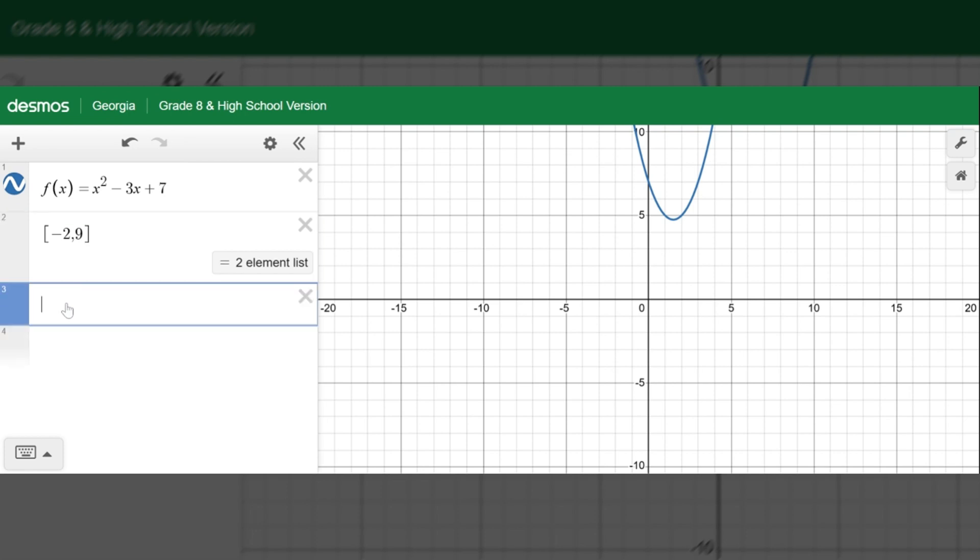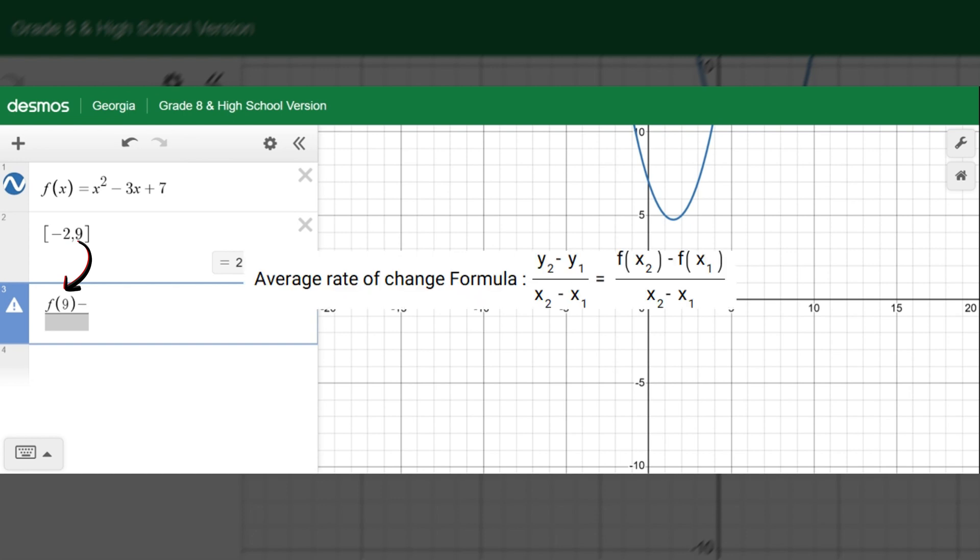Let's say negative 2 is x1 and 9 is x2. To plug into the average rate of change formula, we need to swap the order: x2 which is 9 and x1 which is negative 2. The average rate of change formula will be f of 9 minus f of negative 2 all over 9 minus negative 2. Desmos calculator will give us the answer.